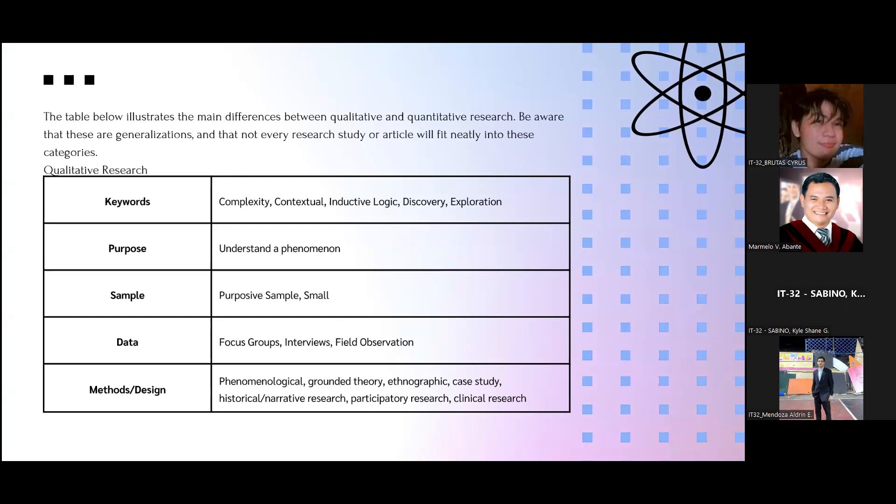So you can see here I created a table and this illustrates the main differences between quantitative and qualitative research. Be aware that these are generalizations; not every study or article fits entirely into these categories. In qualitative research, keywords are complexity, contextual, inductive logic, discovery, and exploration. Its purpose is to understand the phenomena. Sample mostly uses purposive sample or small. Data is focused on groups, interviews, and field observation. Methods and designs are phenomenological, grounded theory, ethnographic, case study, historical narrative research, participatory research, and clinical research.